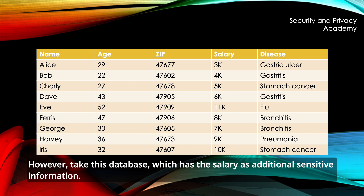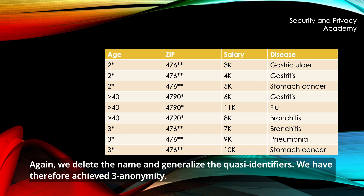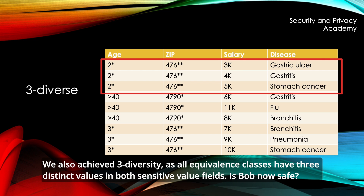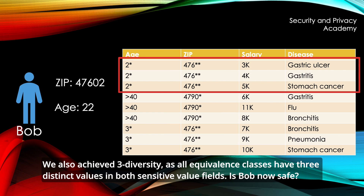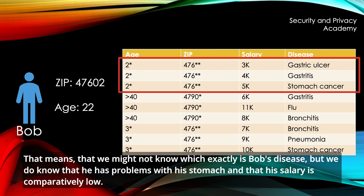However, take this database, which has the salary as additional sensitive information. Again, we delete the name and generalize the quasi-identifiers. We have therefore achieved three-anonymity. We also achieved three-diversity, as all equivalence classes have three distinct values in both sensitive value fields. Is Bob now safe? Not really. As you can see, L-diversity doesn't care about semantics. That means that we might not know which exactly is Bob's disease, but we do know that he has problems with his stomach and that his salary is comparatively low.